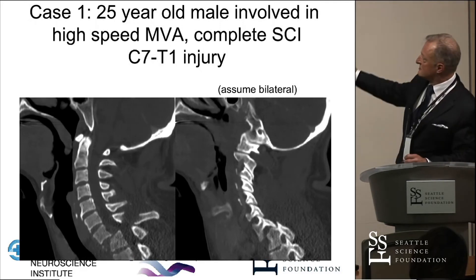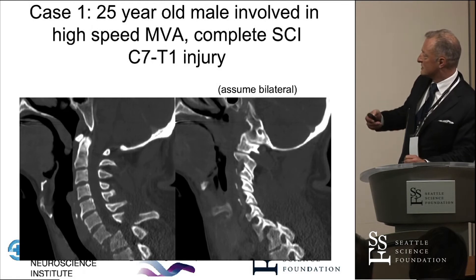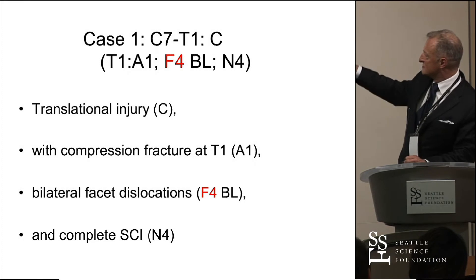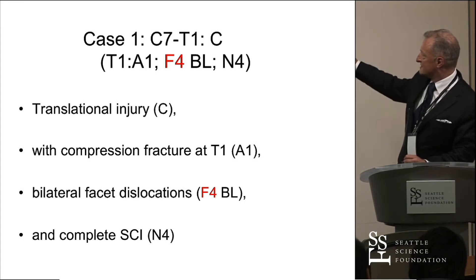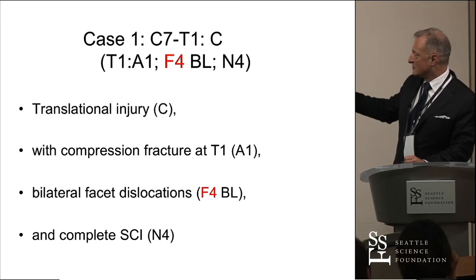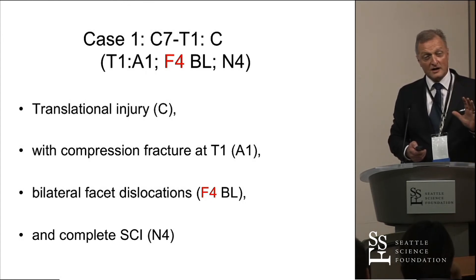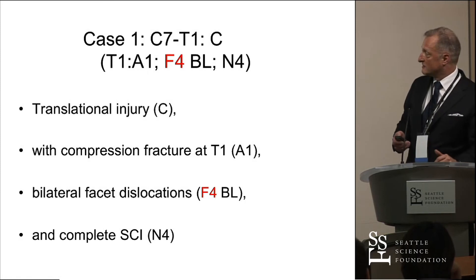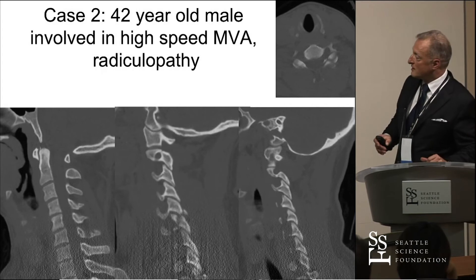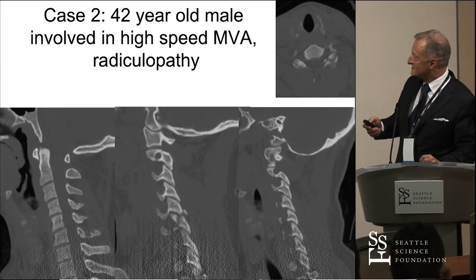For a case example: this is a patient with a very significant C7-T1 disruption — a fracture dislocation with spinal cord injury. We give this an acronym: it's a translational C injury, with a compression fracture at T1 which is an A1, and a bilateral facet dislocation giving it F4-BL, and a complete spinal cord injury N4. This for the first time gives us a real opportunity to look at injuries comprehensively and express them in one codifiable lingua franca.